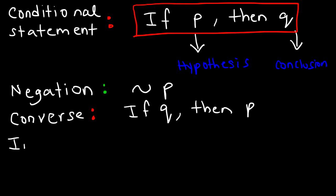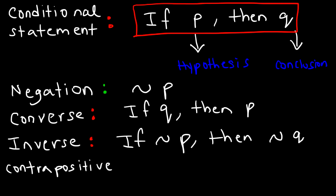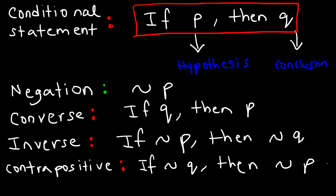The next term you need to be familiar with is the inverse. The inverse is simply the negation of the conditional statement: if not P, then not Q. The last one you need to be familiar with is the contrapositive. The contrapositive is basically the reverse negation of the conditional statement: if not Q, then not P.